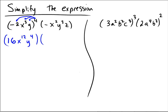On the right, there are no extra exponents, so this would just be negative x squared y cubed z. For the numerical parts, we have 16 times negative 1 — a positive times a negative — so we're going to have negative 16. We have x to the twelfth and x squared; with the same bases we add the exponents: 12 plus 2 is 14, giving us x to the fourteenth.